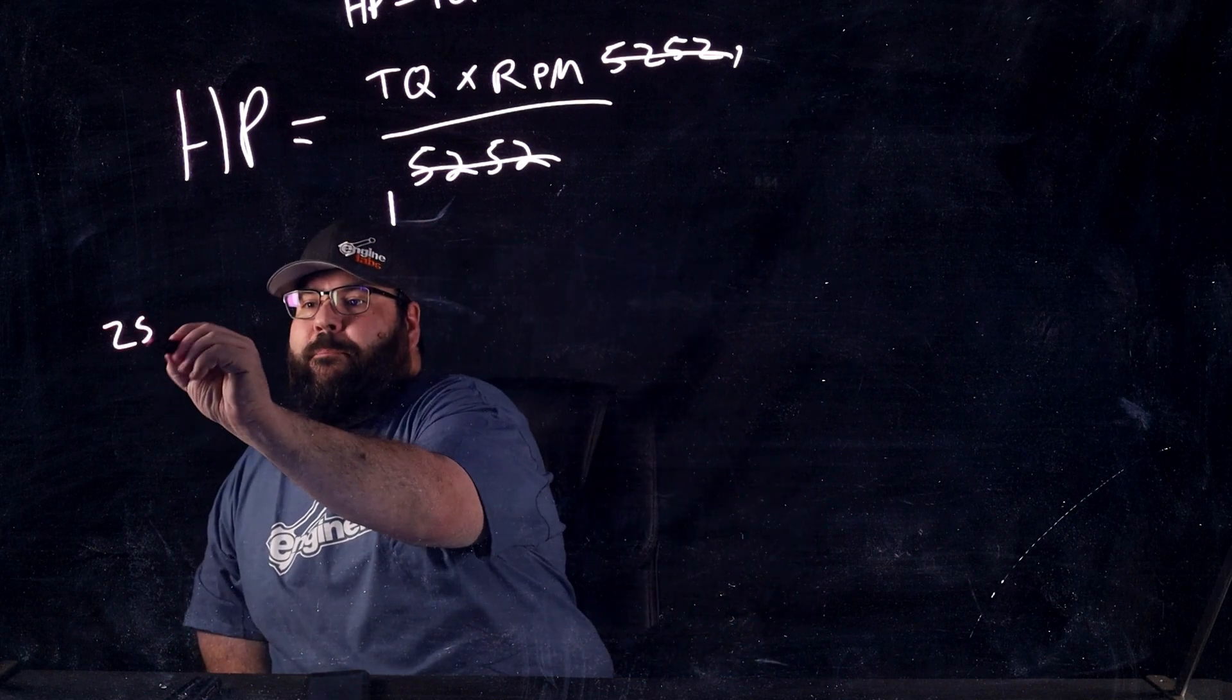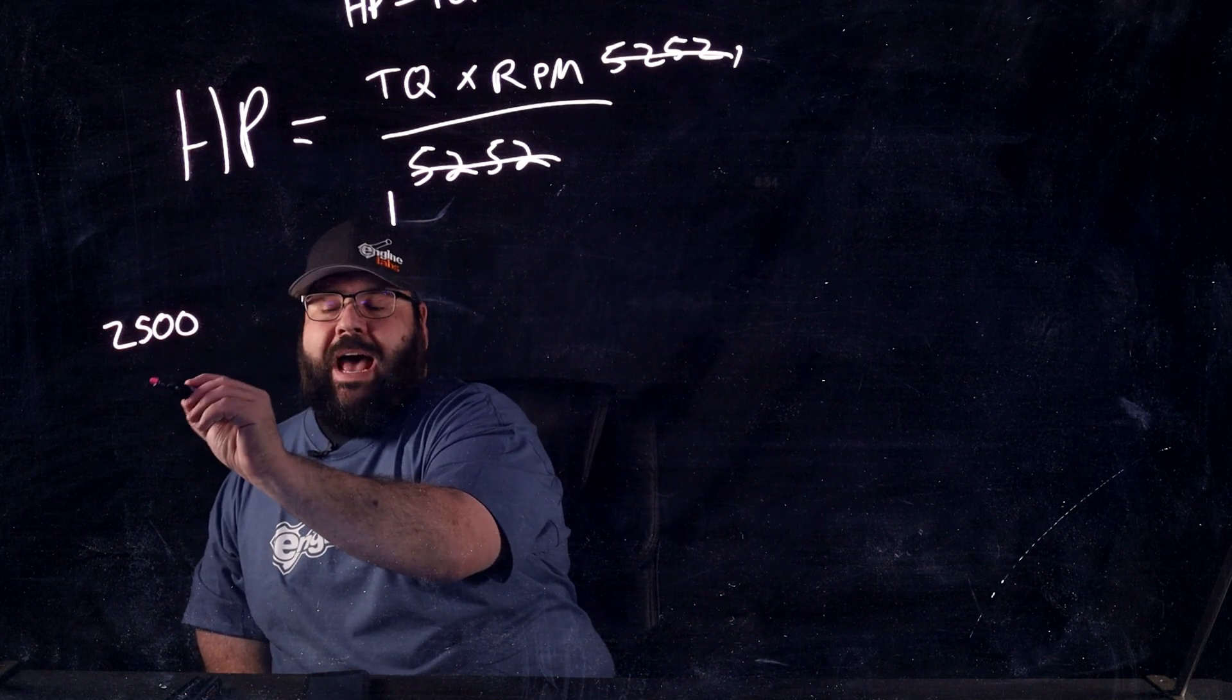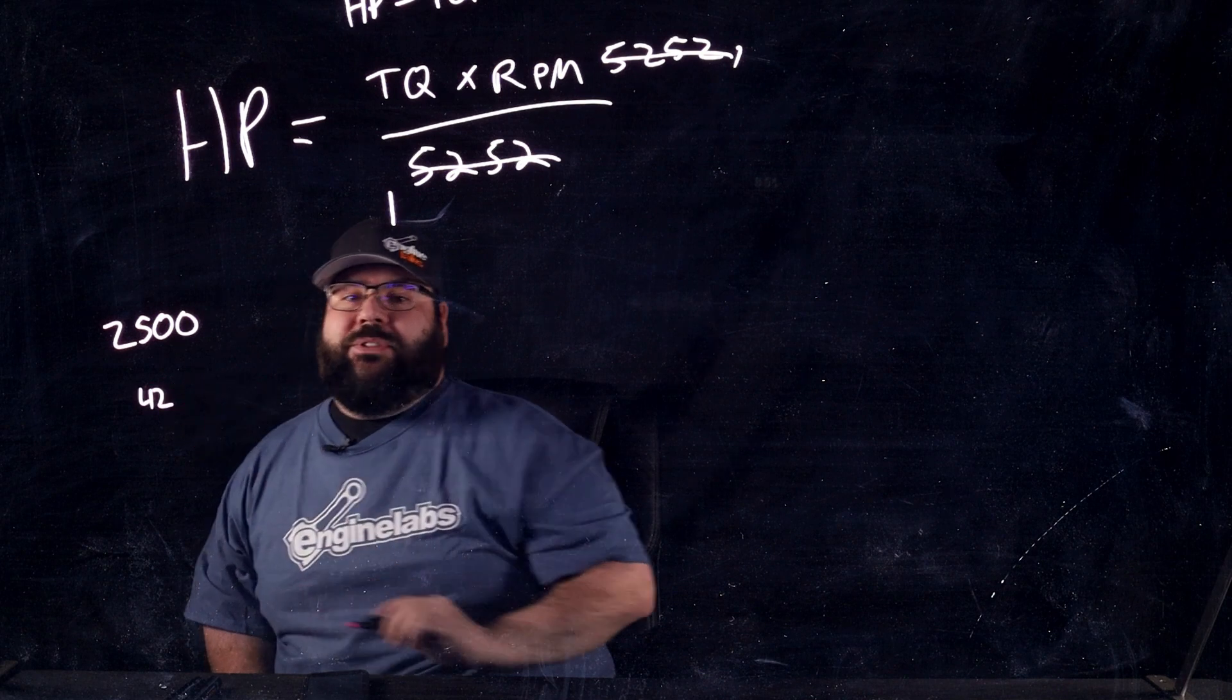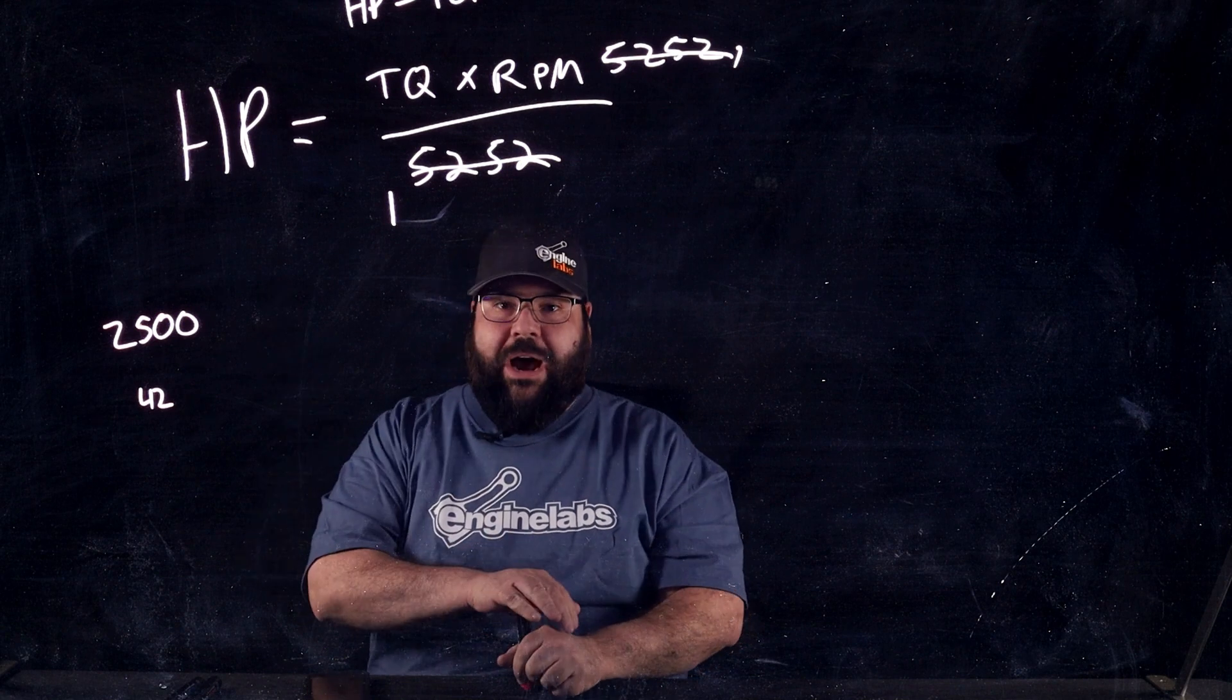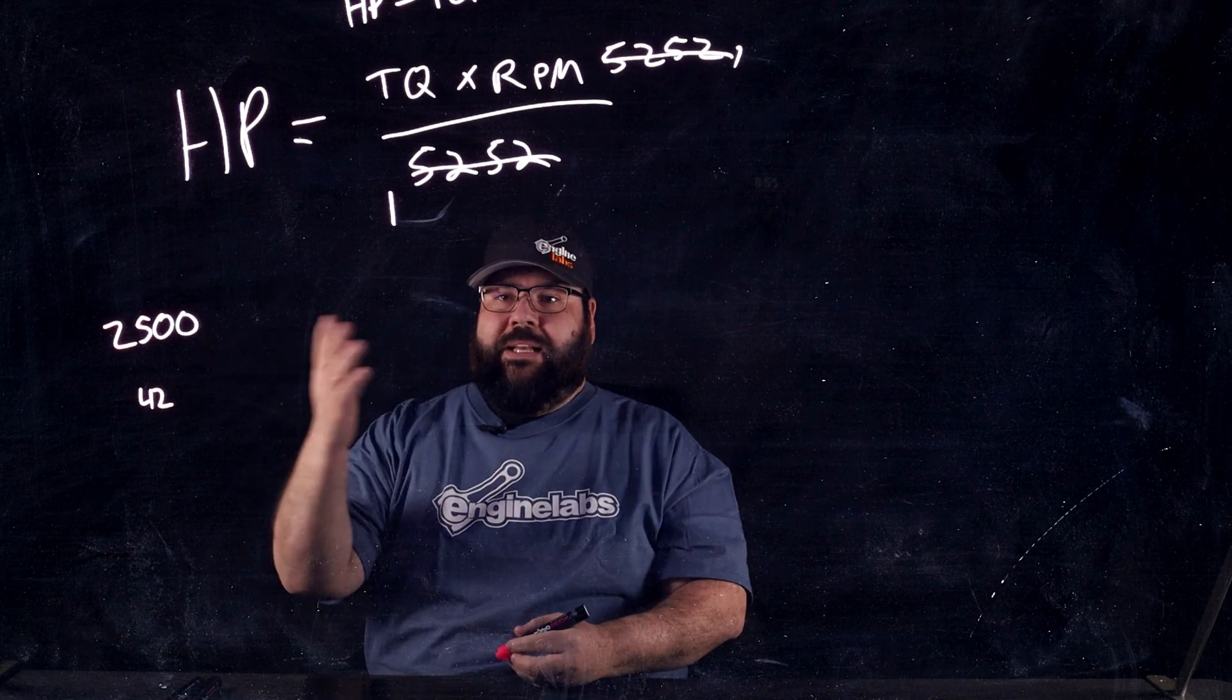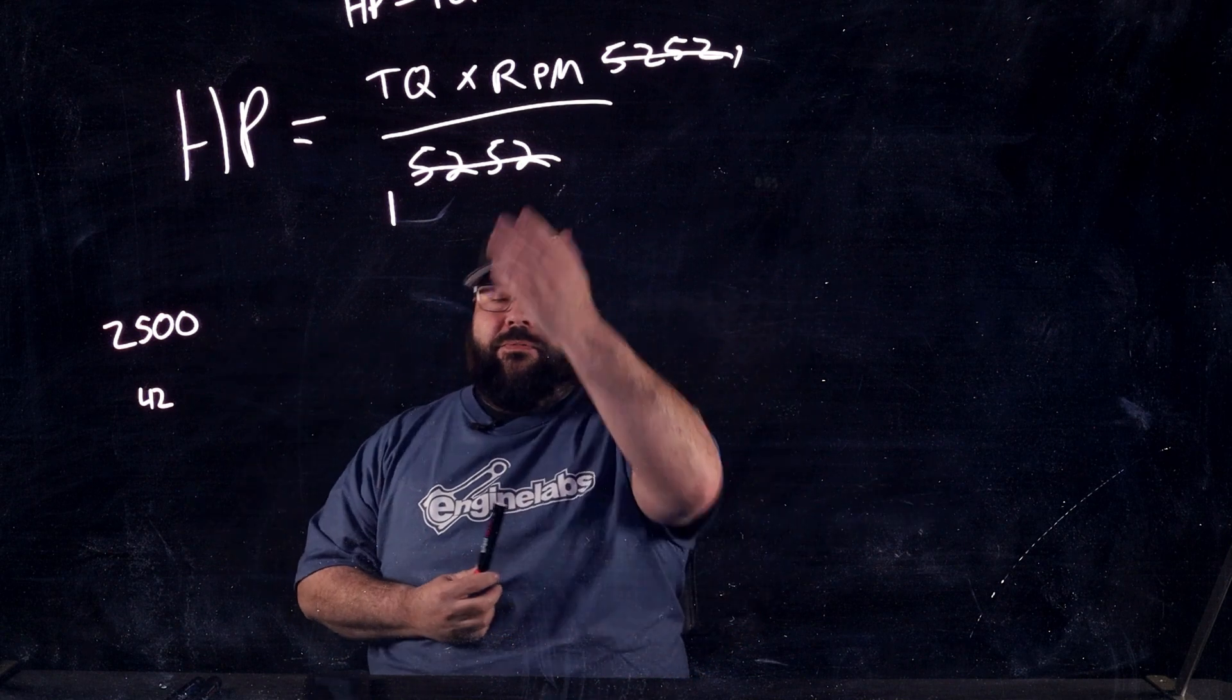So, at 2500 RPM, you are having torque happen 42 times a second. Okay? So, 42 times per second, there's a power impulse, and that makes X amount of horsepower, which we'll calculate.